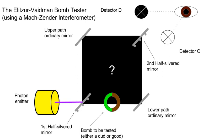When it reaches the second half-silvered mirror, if the photon is behaving like a particle — in other words, if it is not in a superposition — then it has a 50-50 chance it will pass through or be reflected and be detected by one or the other detector. But that's only possible if the bomb is live. If the bomb observed the photon, it detonated and destroyed the photon on the lower path; therefore only the photon that takes the upper path will be detected, either at detector C or detector D.